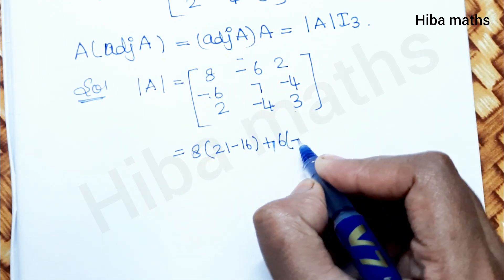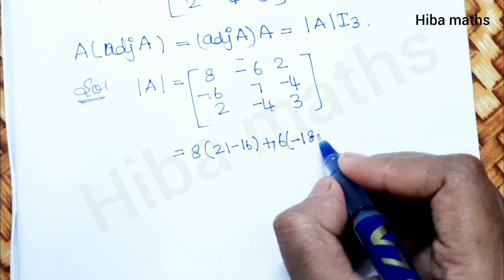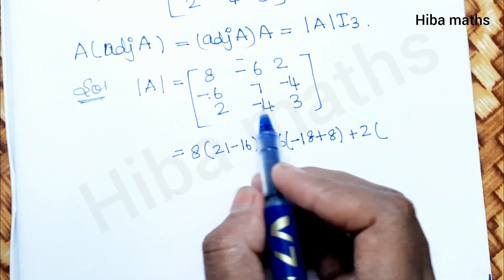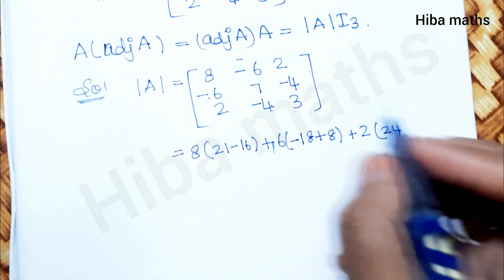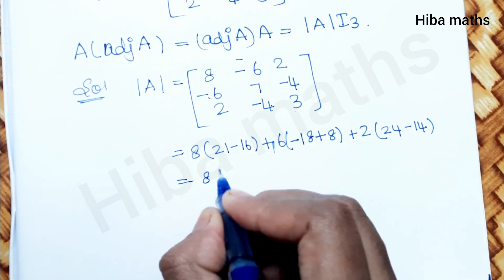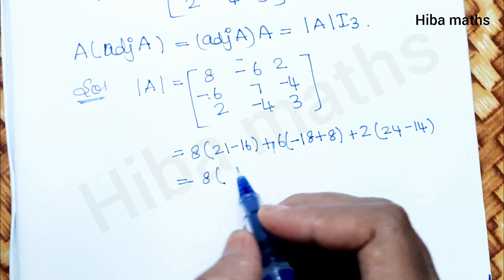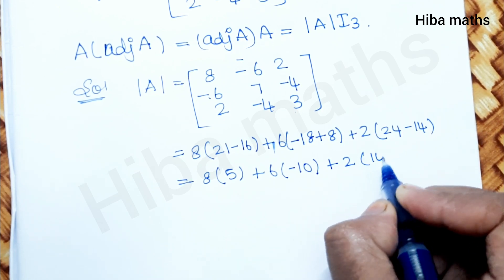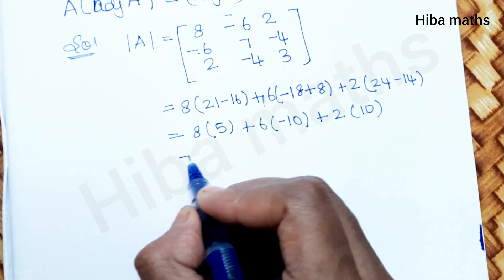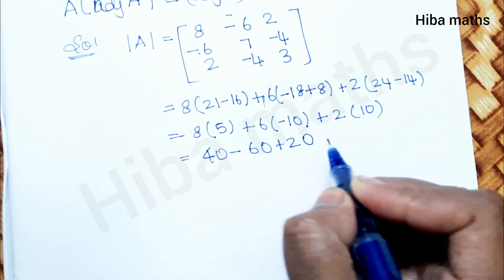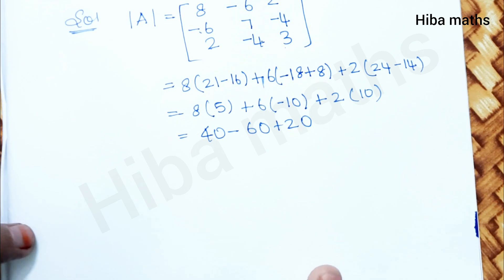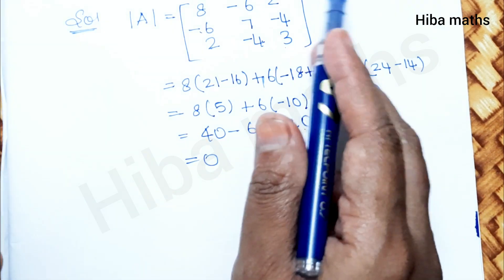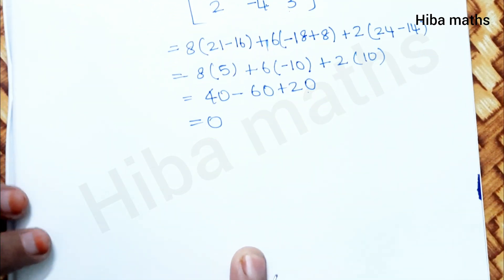Then minus (−6) into ((−6)×3 − (−4)×2), which is −6 into (−18 − (−8)) giving plus 6 into (−10). Then plus 2 into ((−6)×(−4) − 7×2), which is 2 into (24 − 14) equals 2 into 10 equals 20. So modulus of A equals 40 minus 60 plus 20 equals 0. The value of |A| is 0, so 0 times the unit matrix is 0.